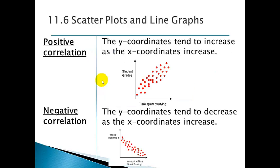The main ones we're going to be looking for are positive correlation, negative correlation, and then no correlation. Here we go - positive correlation: the y-coordinates tend to increase as the x-coordinates increase. Both are going up. As the time spent studying increases, your grades would increase. That's a positive correlation, and you can see that both are going up.